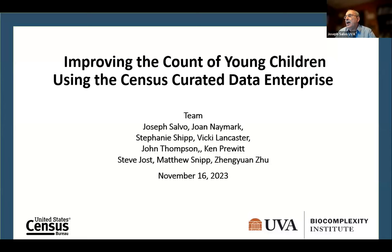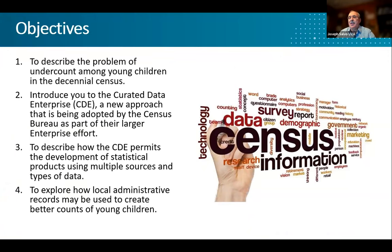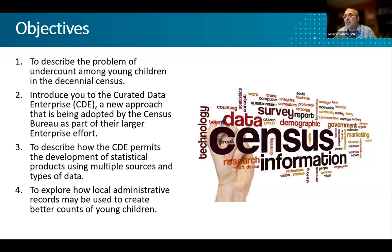We are working with the Census Bureau to improve the counts of young children, which many of you have heard about today. The census data is all over, and for good reason — it's the best source of small area data. I worked as the chief demographer for New York City for several decades, and I know the value of small area data for program work. What I want to do here today is describe the problem of undercount among young children in the decennial census and talk a little bit about the implications for the American Community Survey.